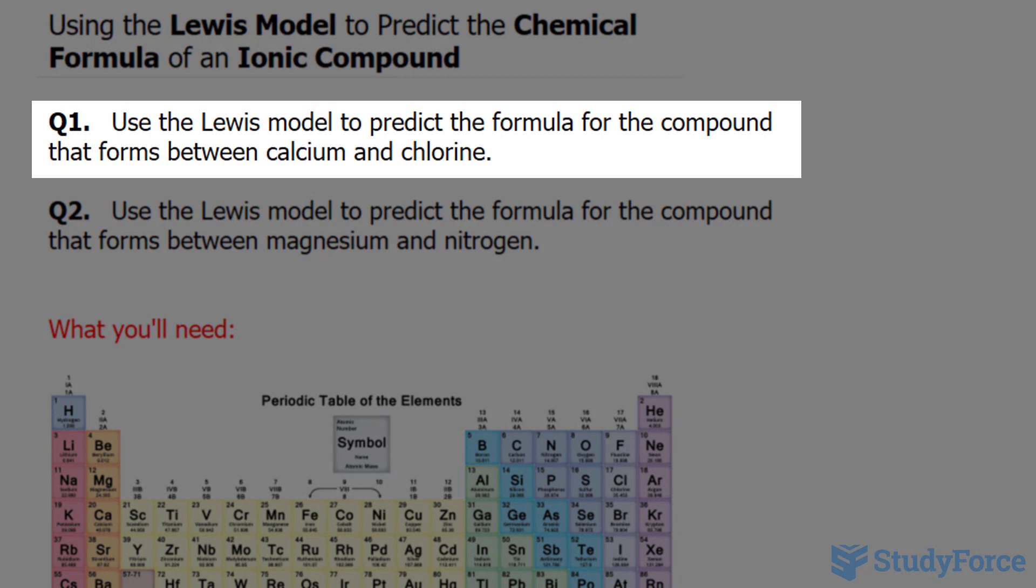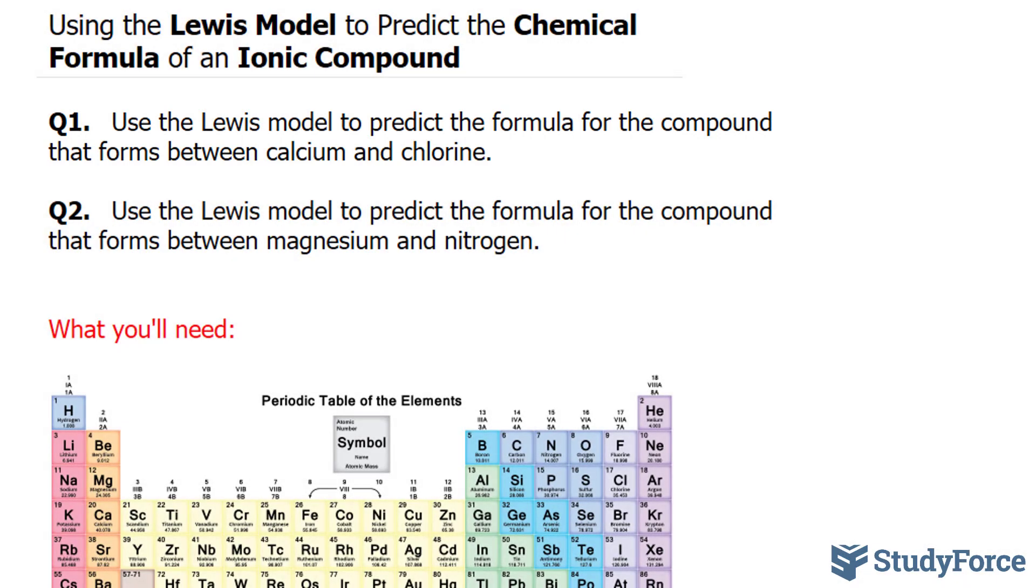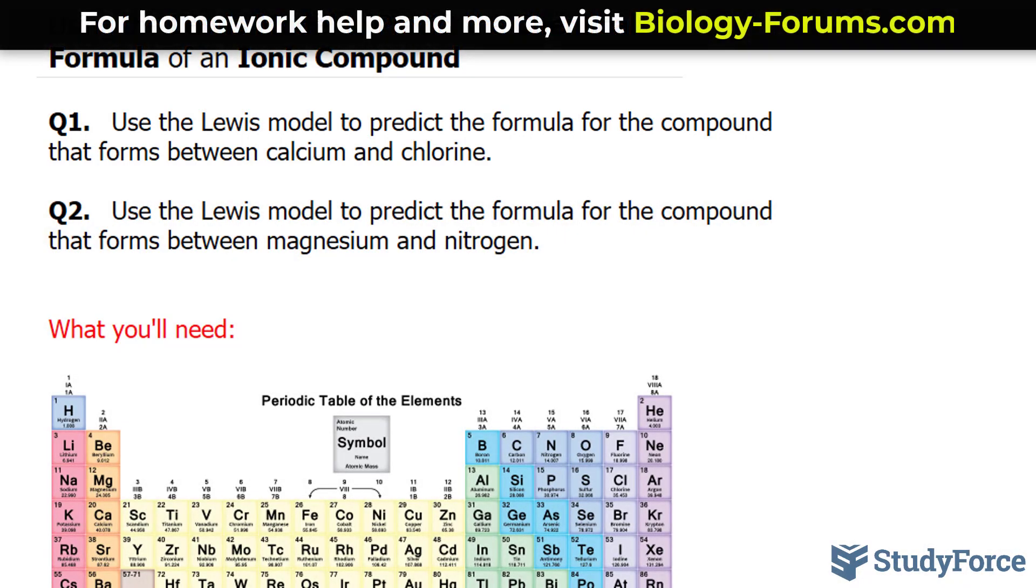Question 1 reads, use the Lewis model to predict the formula for the compound that forms between calcium and chlorine. The first thing we'll do is draw the Lewis symbols for calcium and chlorine based on their respective number of valence electrons.